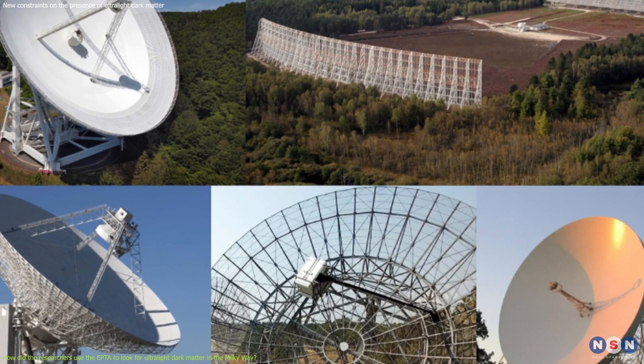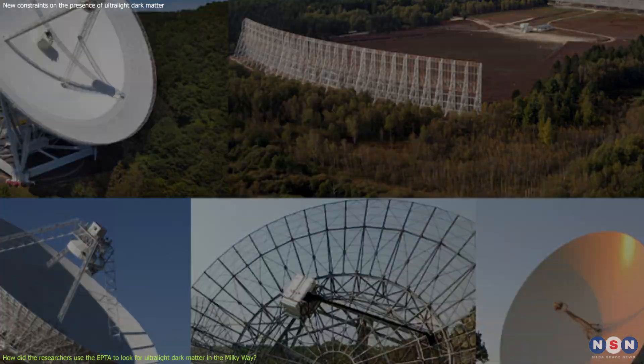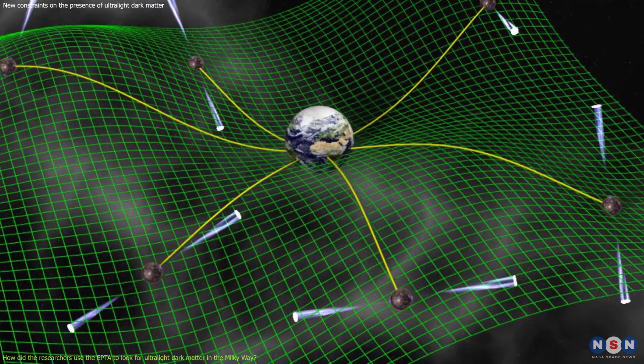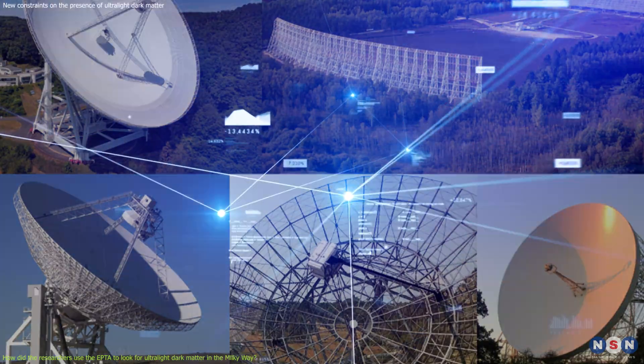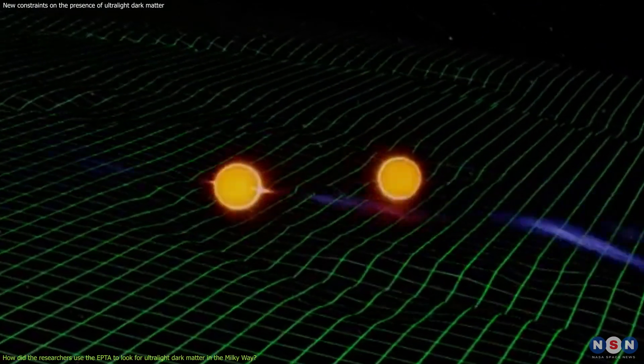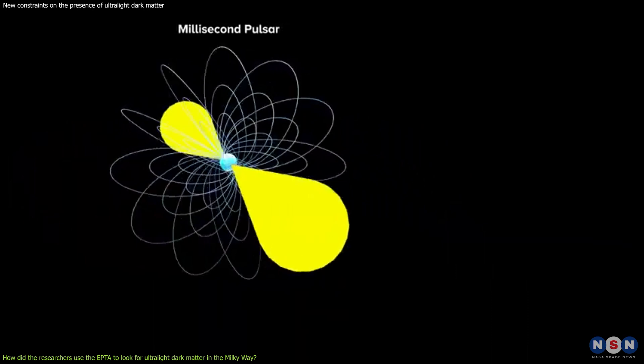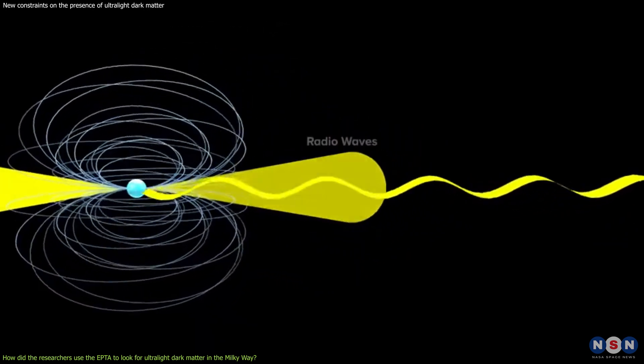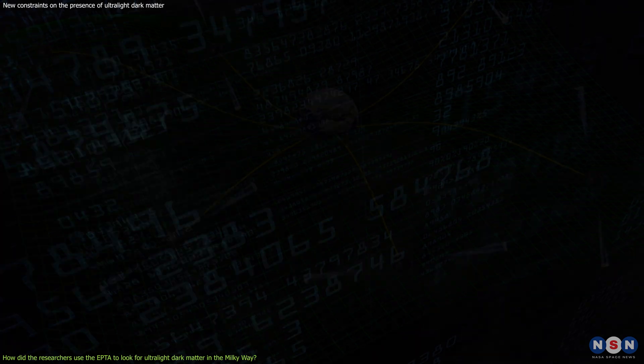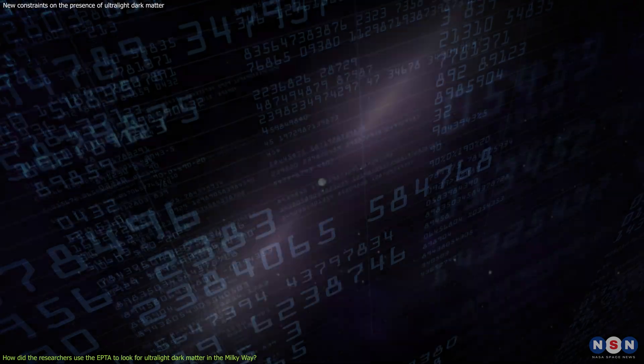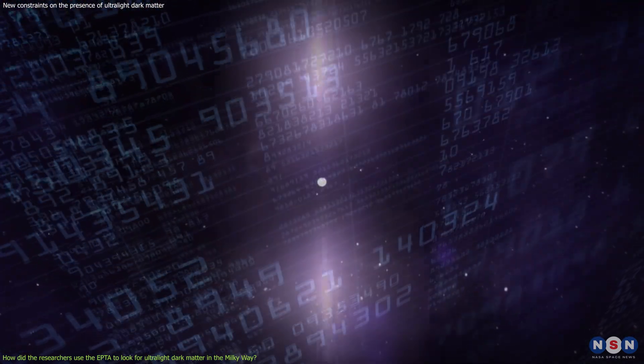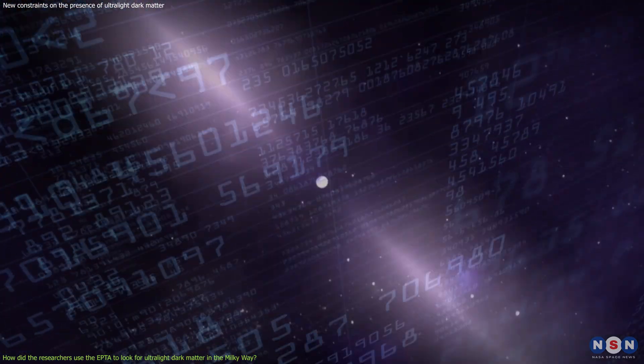The EPTA is a collaboration of five radio telescopes in Europe that observe a network of pulsars in the Milky Way galaxy. It combines the data from these telescopes to create a pulsar timing array, which is a powerful tool to study the effects of gravity and dark matter on pulsar signals. The EPTA has been collecting data for more than a decade, and it recently released its second dataset, which contains the timing of 47 pulsars over a span of 12 years.